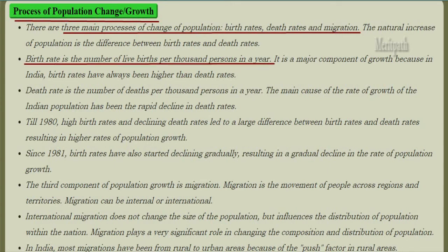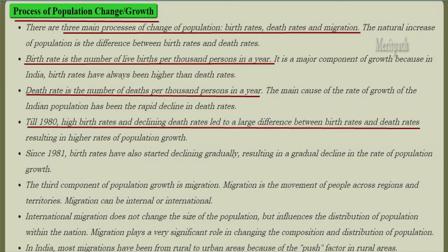Birth rate is the number of live births per thousand persons in a year, and it is a major component of growth because in India birth rates have always been higher than the death rate. Death rate is the number of deaths per thousand persons in a year. The main cause of population growth was a rapid decline in the death rate. Till 1980, high birth rates and declining death rates led to a higher rate of population growth. Since 1981, birth rates have also started declining, resulting in a decline in the rate of population growth.